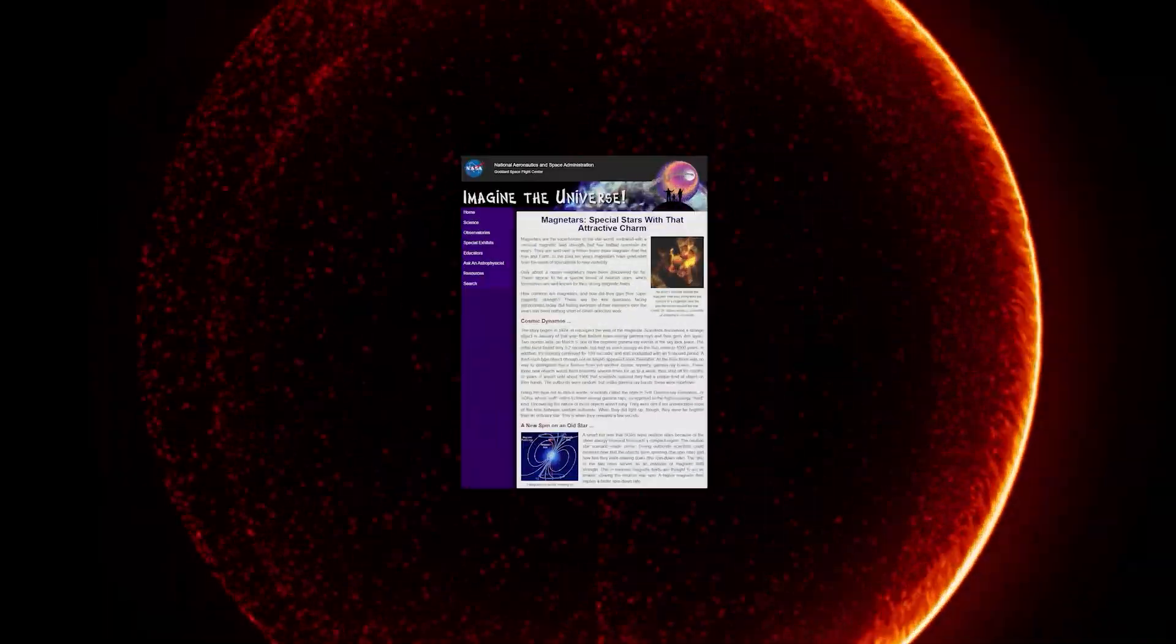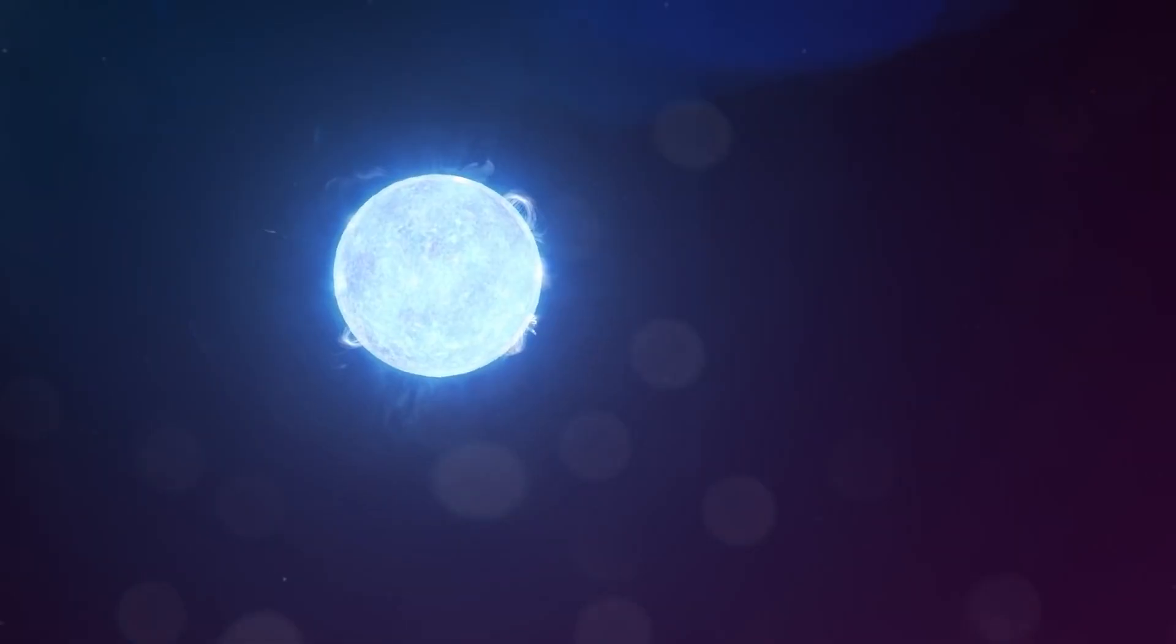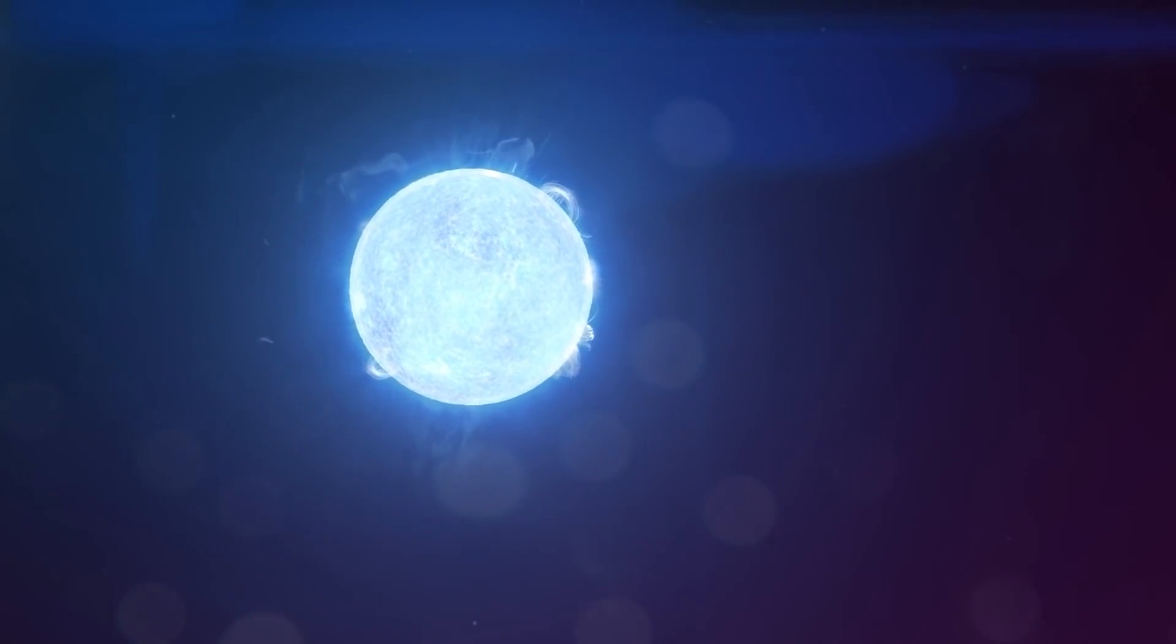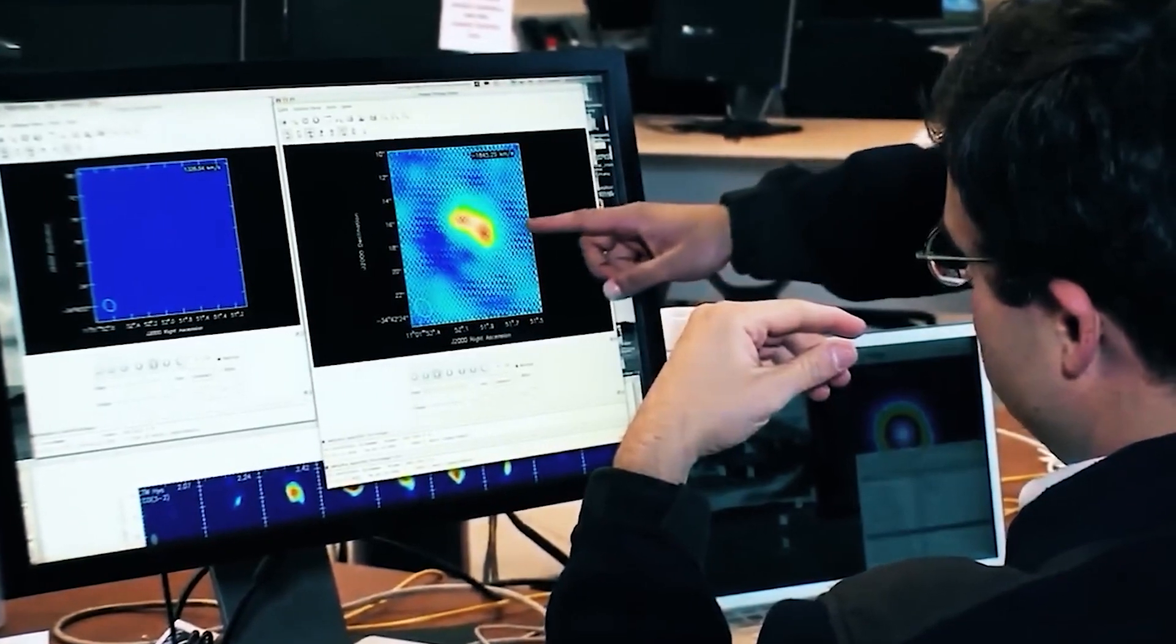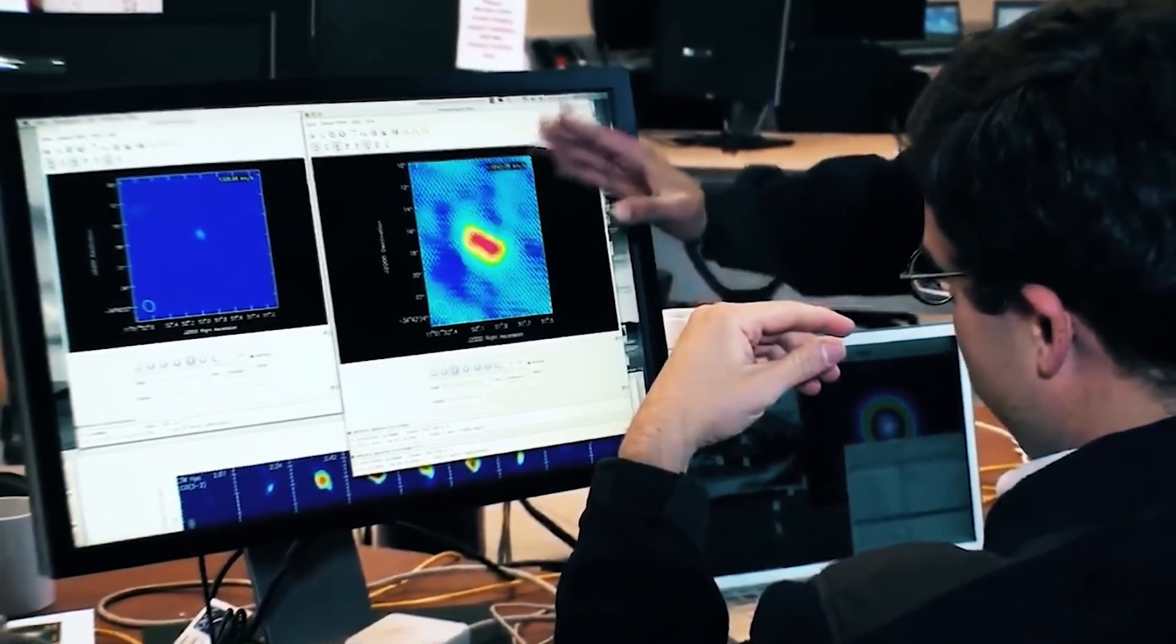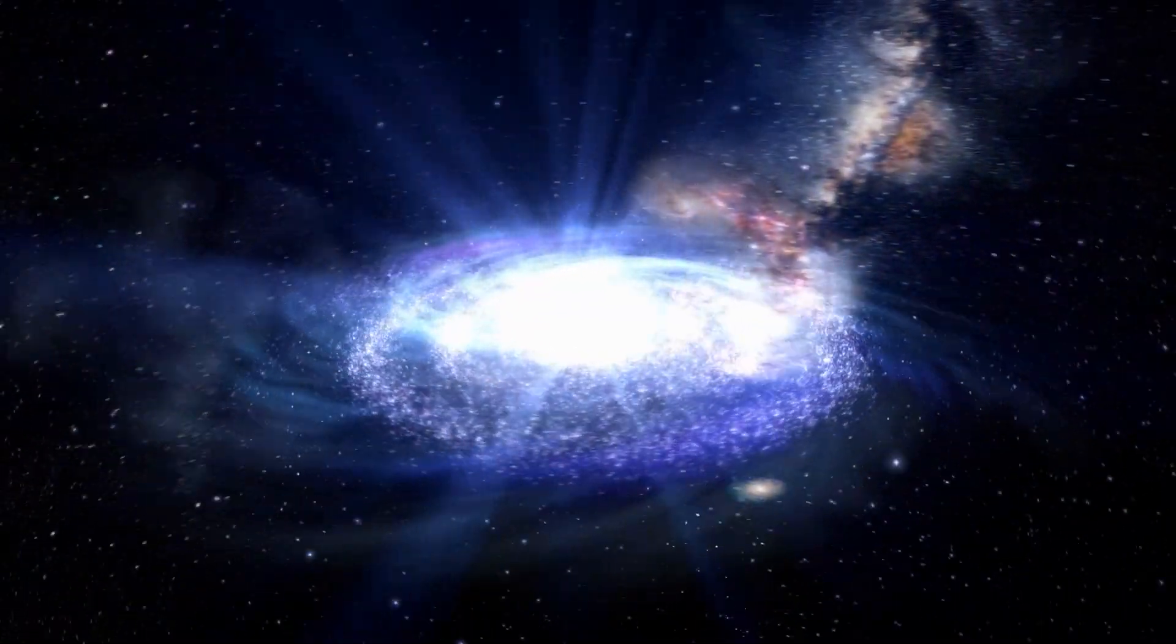The concept of magnetars was first proposed in 1979, and these enigmatic objects are thought to be among the densest in the entire universe. Despite the mysteries surrounding them, scientists have identified dozens of magnetars in and around the Milky Way over the years.